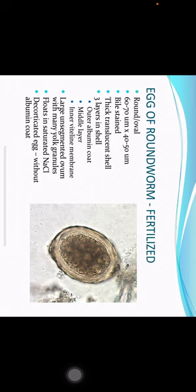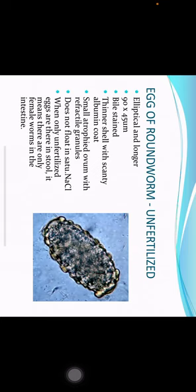If the fertilized egg is decorticated, it will be without the albumin coat. Unfertilized egg of roundworm: it is elliptical and longer in shape, 90 by 45 micrometers in dimension. It is bile stained. It has a thinner shell with scanty albumin coat. A small atypical ovum is inside without refractile granules. The unfertilized egg does not float in saturated solution of common salt. When only unfertilized eggs are present in stool, it means there are only female worms in the intestine.